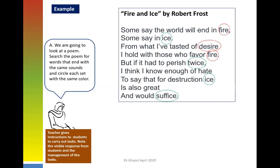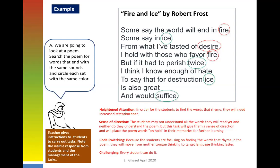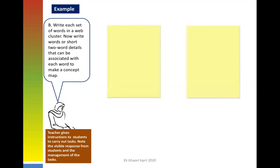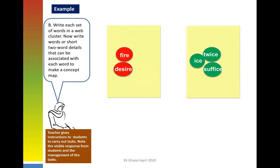Students must have heightened attention as they search the text for rhyming words. The brain is functioning in rhyme — what are the ending sounds? It's heightened attention, sense of direction, code switching, and inclusive challenge — everybody can do it. Then write each set in a web cluster: the first cluster is 'fire, desire,' the second cluster is 'twice, ice, suffice,' and now we have moved up to a higher thinking level.